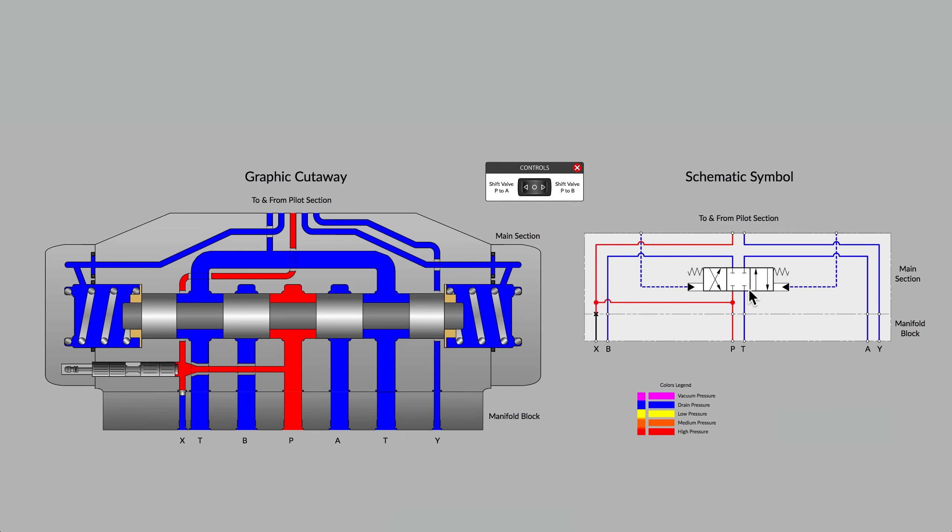This particular one is showing a closed center, which means that our A and B ports are blocked, as shown here. And also, our P port cannot send any flow to any other port, nor can the T port be connected to any other port when the valve is in the neutral position.